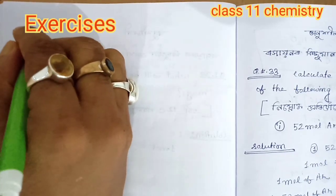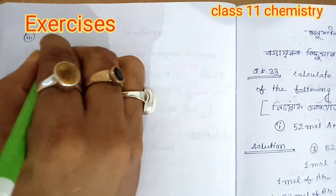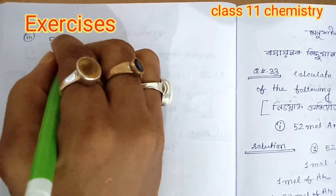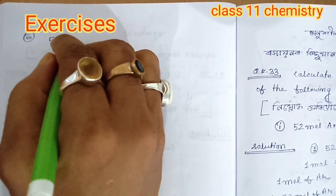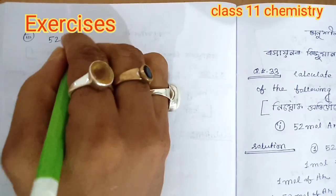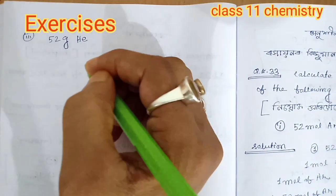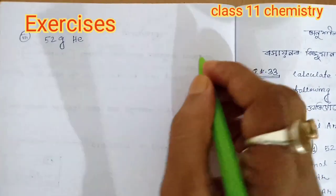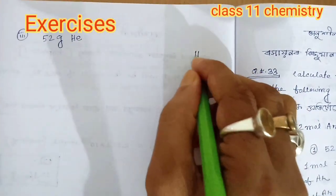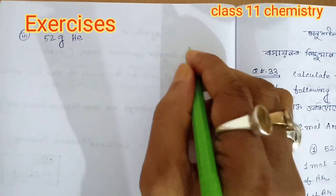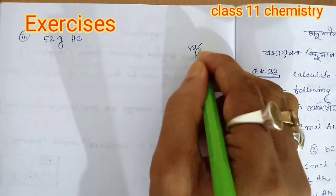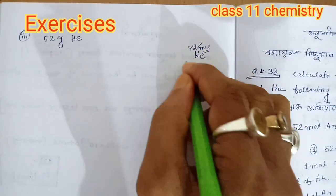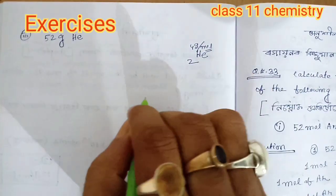The number given is 52 grams of helium. The molar mass of helium is 4 gram per mole, and its atomic number is 2.